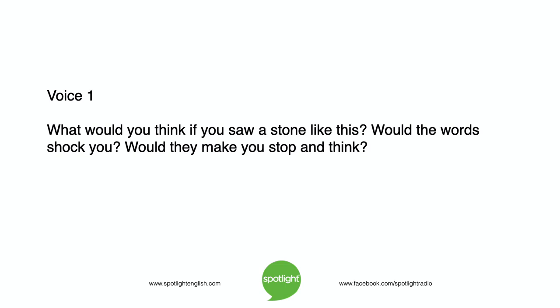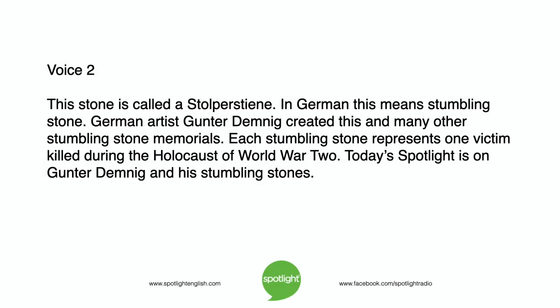What would you think if you saw a stone like this? Would the words shock you? Would they make you stop and think? This stone is called a Stolperstein. In German, this means stumbling stone. German artist Gunter Demnig created this and many other stumbling stone memorials. Each stumbling stone represents one victim killed during the Holocaust of World War II. Today's Spotlight is on Gunter Demnig and his stumbling stones.